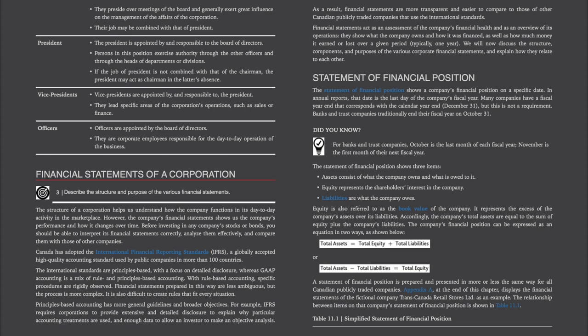Did you know? For banks and trust companies, October is the last month of each fiscal year, and November is the first month of their next fiscal year. The statement of financial position shows three items: assets — what the company owns and what is owed to it; equity — the shareholder's interest in the company; and liabilities — what the company owes. Equity is also referred to as the book value of the company, representing the excess of the company's assets over its liabilities. Accordingly, the company's total assets are equal to the sum of equity plus the company's liabilities.